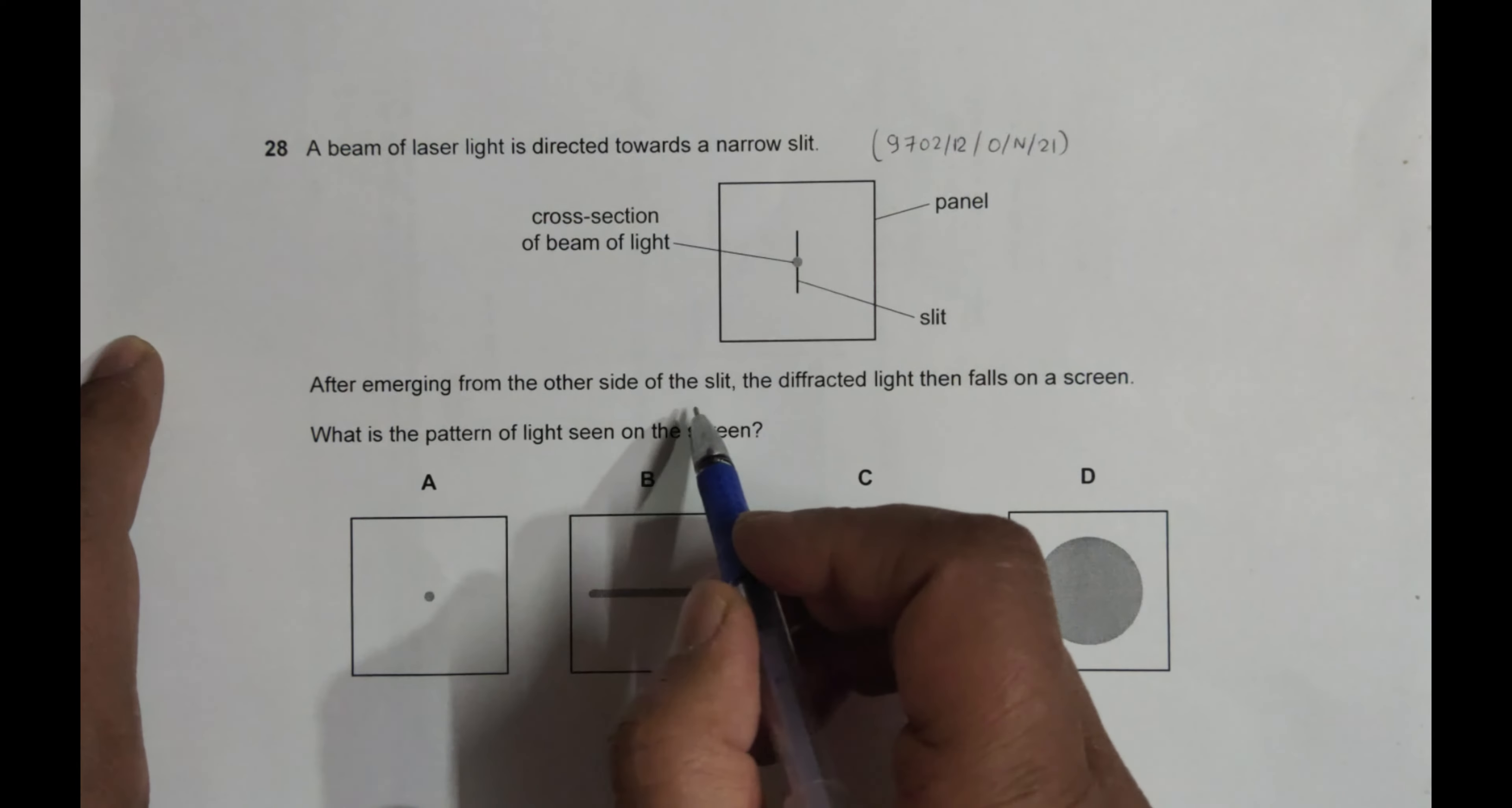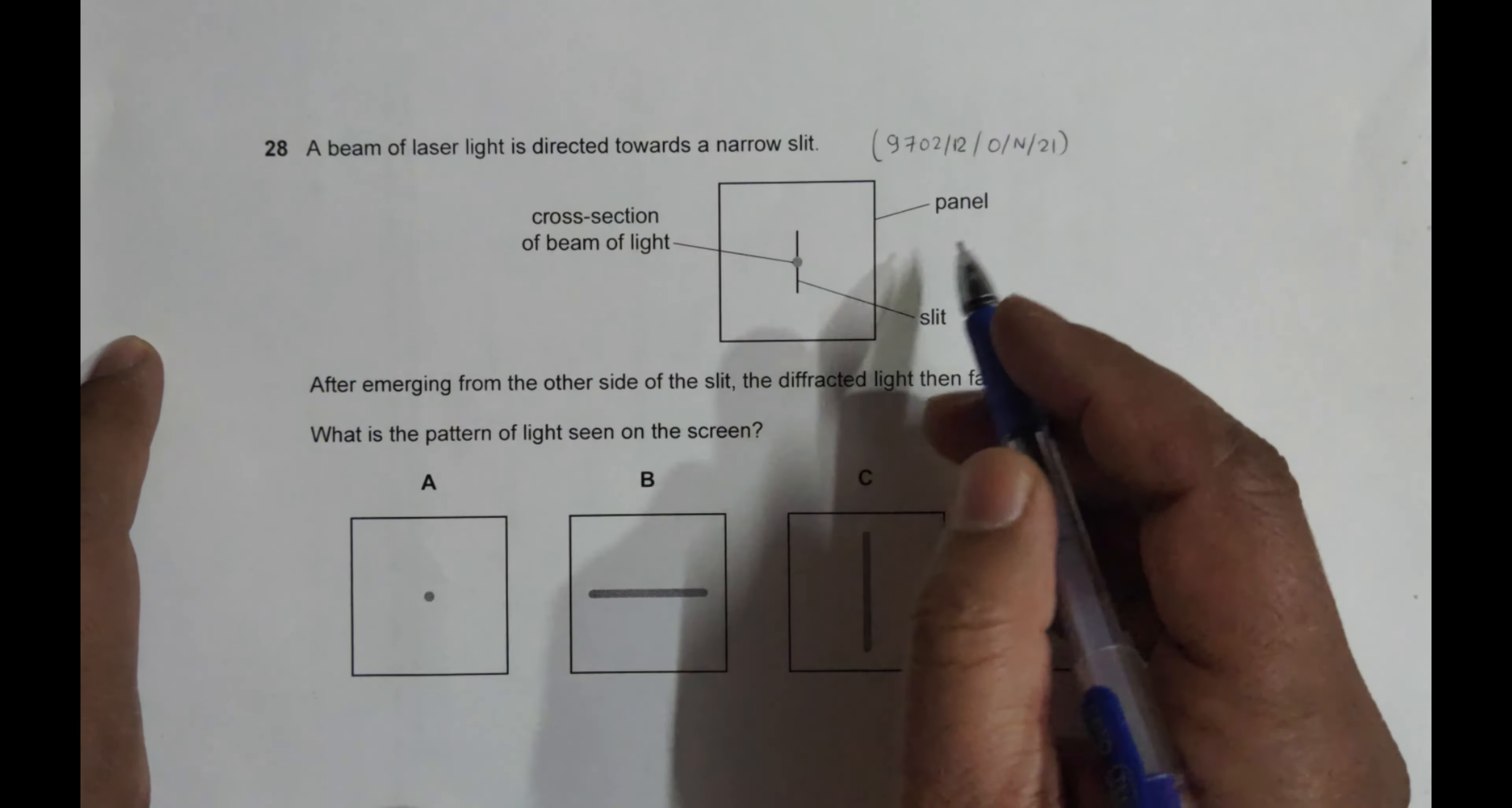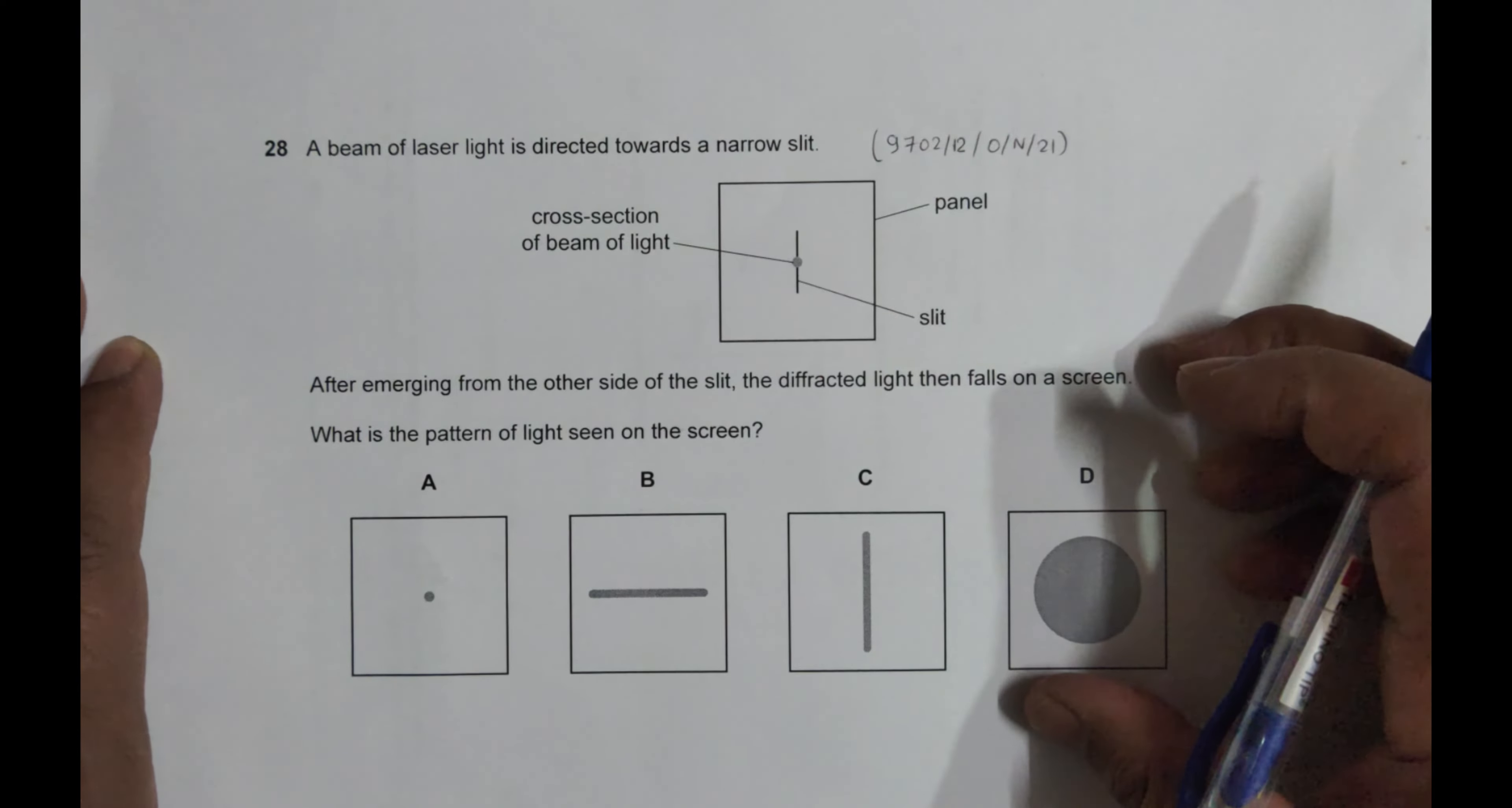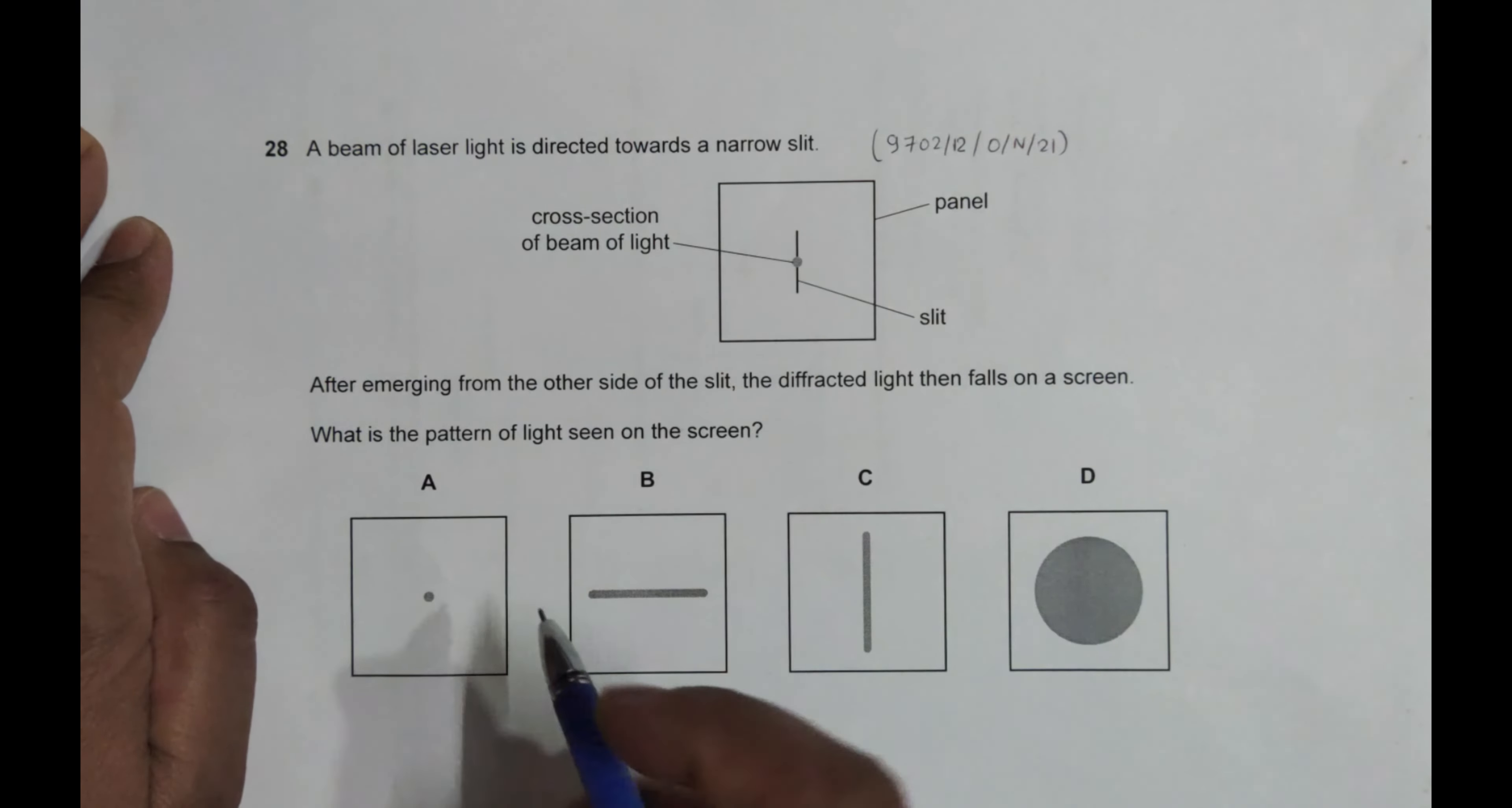After emerging from the other side of the slit, the diffracted light then falls on the screen. So the phenomenon here undergoing is diffraction. What is the pattern of light seen on the screen? So we have to identify the pattern of light.